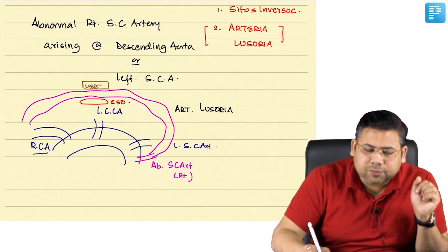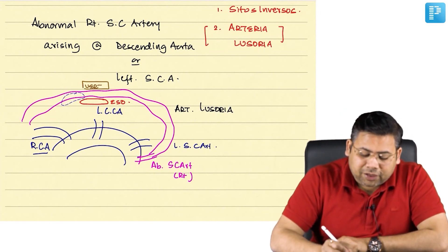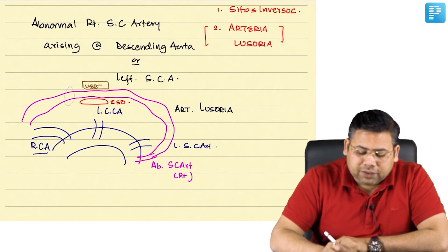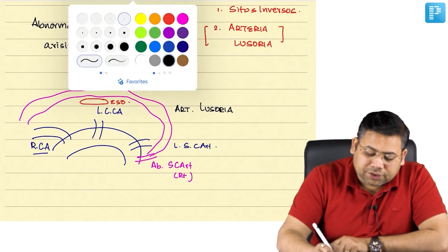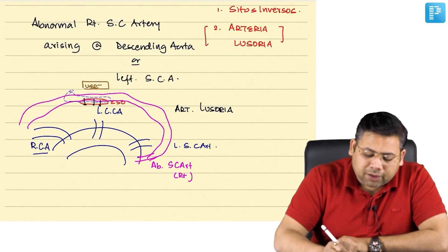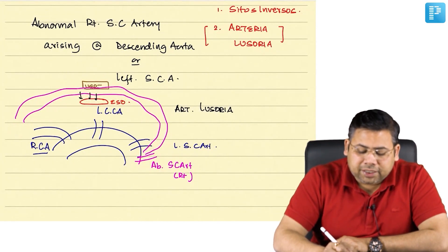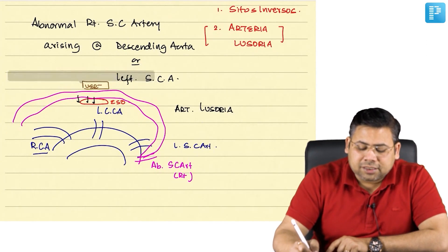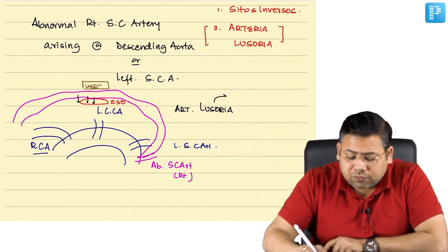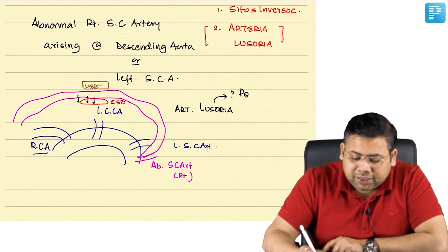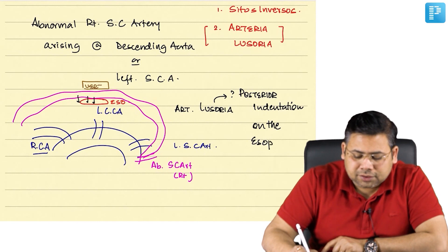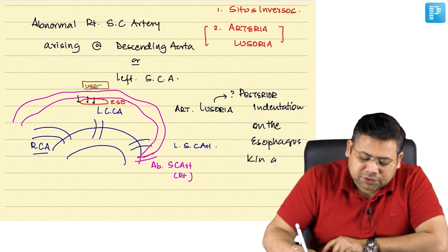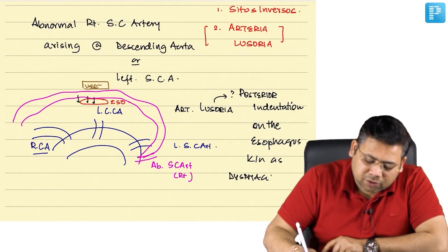Because this is a right subclavian artery it will always have pulsations, and the pulsations will cause a posterior indentation on the esophagus — that is why it will cause intermittent dysphagia to the patient. This is known as dysphagia lusoria: posterior indentation on the esophagus caused by the aberrant vessel.